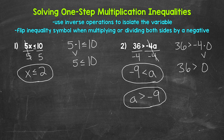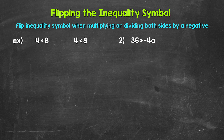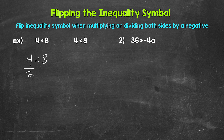Now let's talk about flipping the inequality symbol and why this happens when we multiply or divide both sides by a negative. Let's start with the example: 4 is less than 8. Is this true? Of course — 4 is less than 8. Now let's divide both sides by positive 2. We have 4 is less than 8, dividing both sides by 2. On the left, 4 divided by 2 gives us 2; on the right, 8 divided by 2 gives us 4. So we have 2 is less than 4 — yes, that inequality remains true.